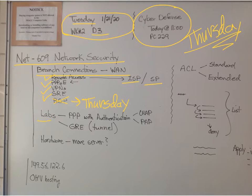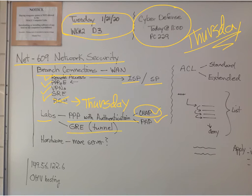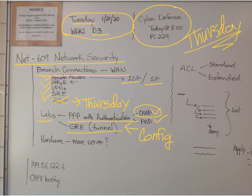The labs: we finished up CHAP and PAP for authentication — we actually just did CHAP. For the GRE tunnel lab, they were supposed to have it configured up to making the tunnel. We should have that done. And we moved the other server.